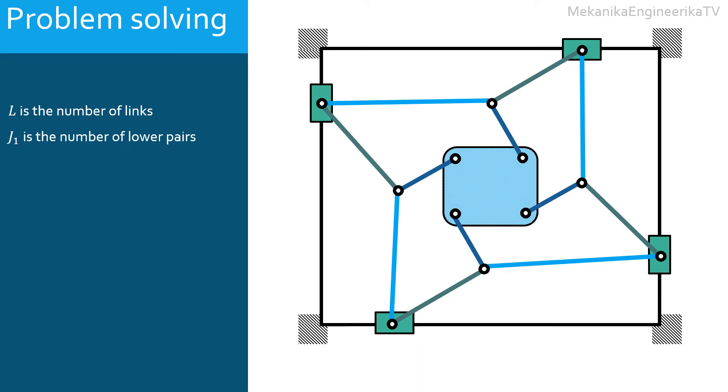Third, we need to determine J2, the number of higher pairs, or the number of joints allowing each two degrees of freedom. Finally, we will calculate mobility M as 3 times L minus 1, minus 2 J1, minus J2.